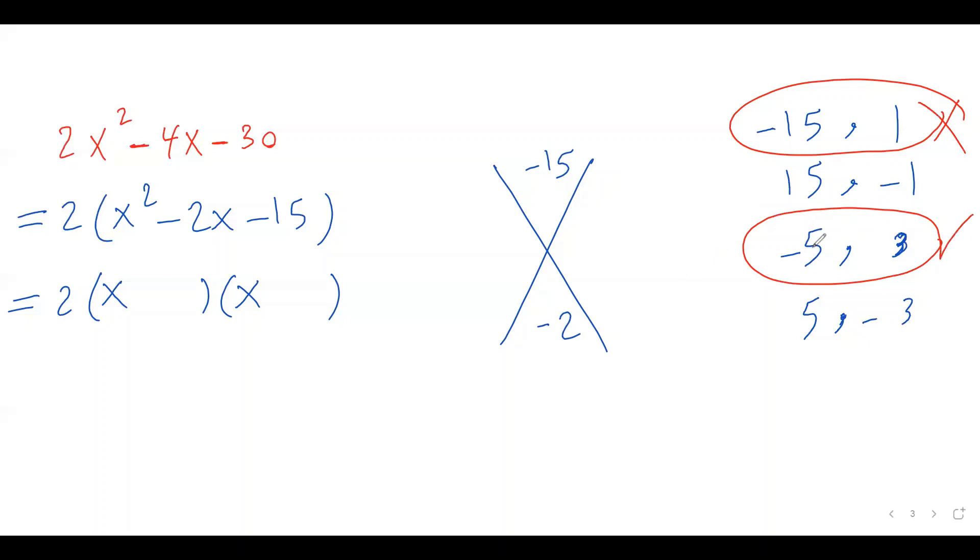So, I plug in those two numbers into this bracket. So, x minus 5 and x plus 3. These are, this is basically the factored form, the factored form of these quadratic equations.